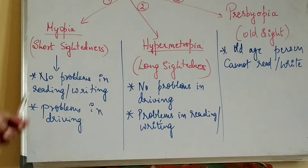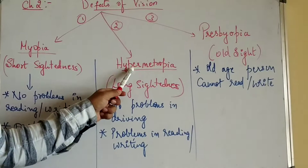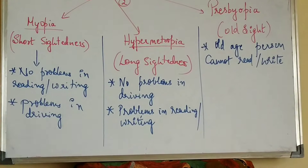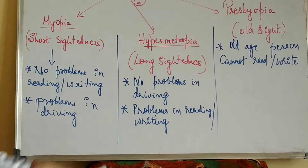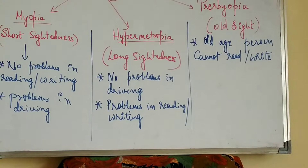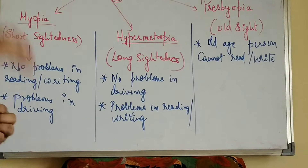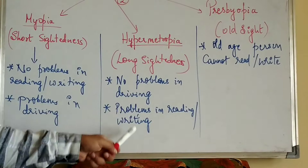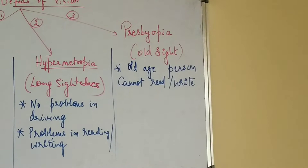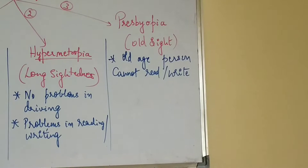The second defect is hypermetropia, also called long-sightedness. The characteristics of hypermetropia are exactly opposite to myopia. A person having hypermetropia doesn't have problems in driving — he can see vehicles coming from far away — whereas he faces problems in reading and writing. The third defect is presbyopia, also called old sight, which is observed in old-age persons.